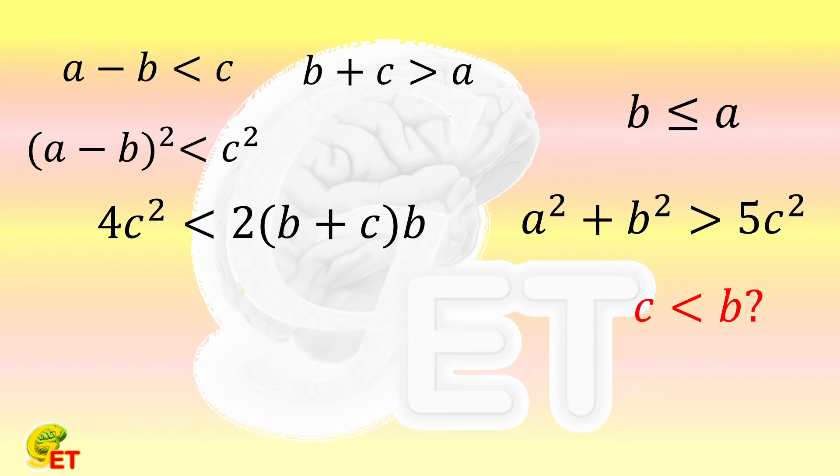At this point, if we already know how to solve quadratic inequalities, we can take b as a known variable and c as an unknown variable, and directly solve it to prove c < b. But it also doesn't matter if we haven't learned about how to solve quadratic inequalities yet.